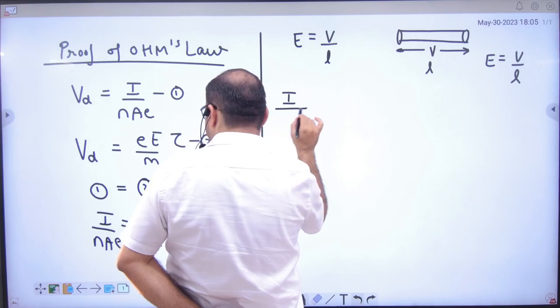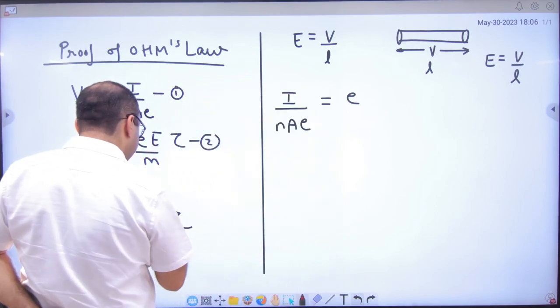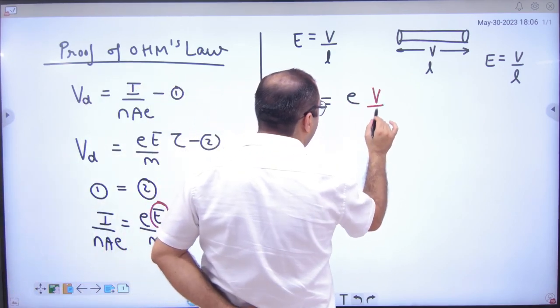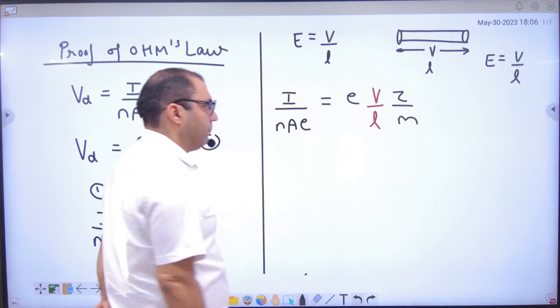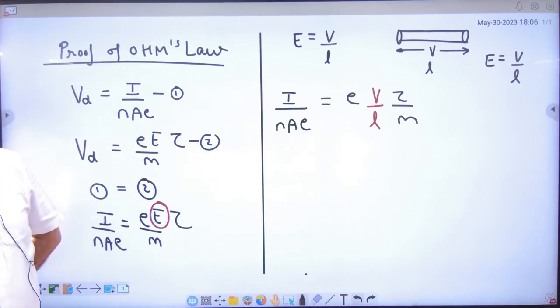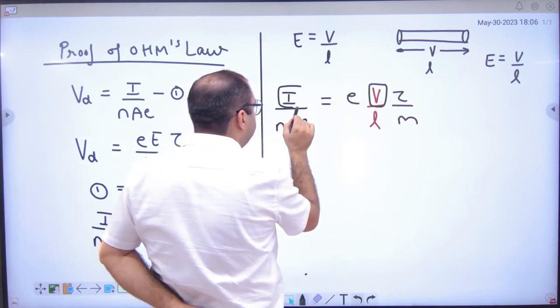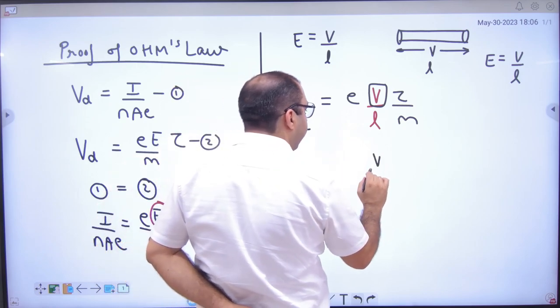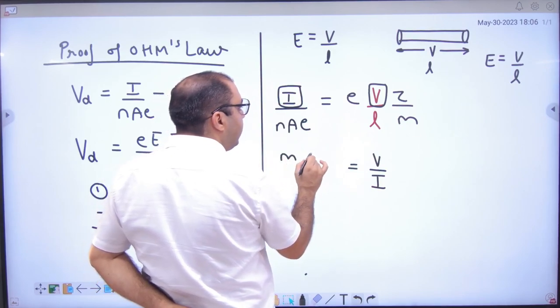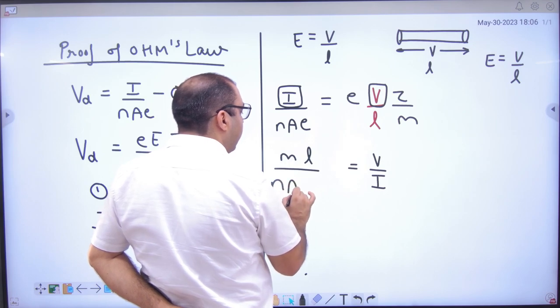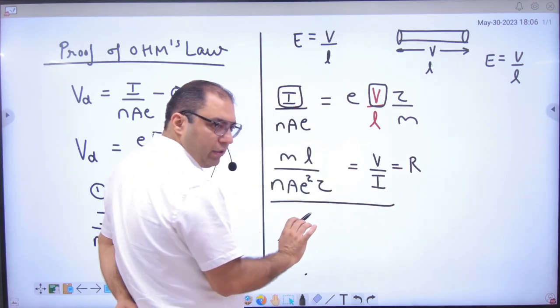I divided by NAE is equal to E and this electric field is divided by M into Tau. So I divided by NAE equals V by ML into Tau.